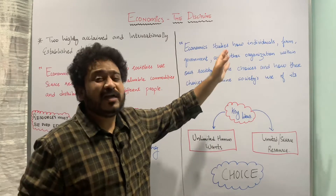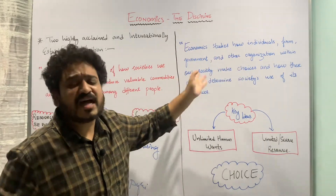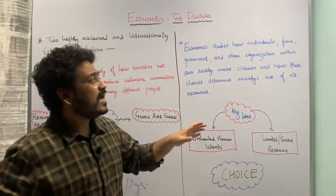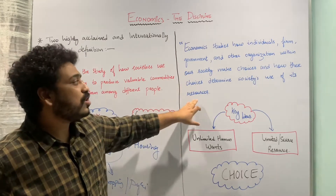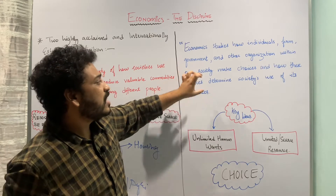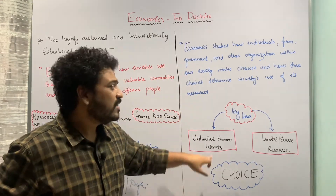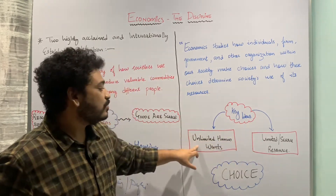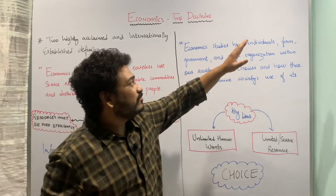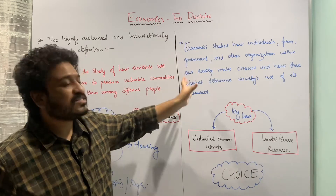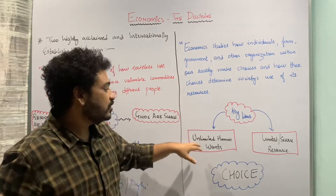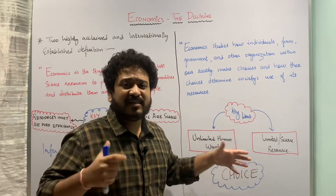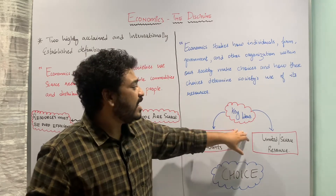The second definition states that economics studies how individuals, firms, governments, and other organizations within our society make choices, and how these choices determine society's use of its resources. The key underlying idea here is limited or scarce resources on one hand, and unlimited human wants on the other. Firms, individuals, governments, and organizations all represent different wants.